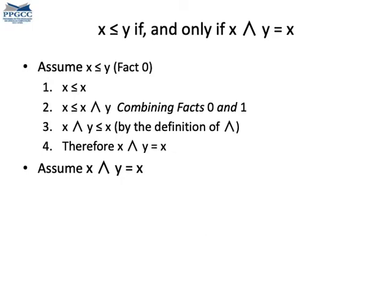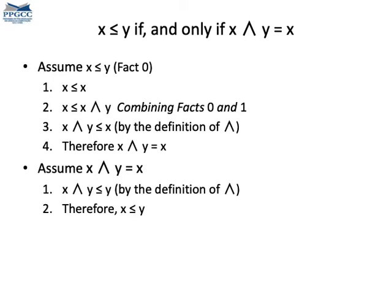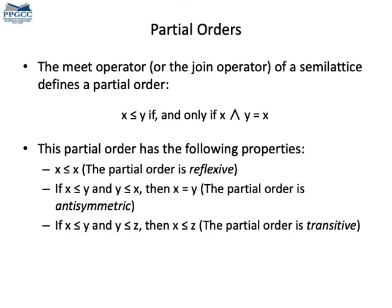But in this case, x must be less than or equal the meet of x and y. But the meet of x and y is less than or equal x by definition. The other direction of the proof is even simpler. If we assume that x meets y is x, then we already know that x meets y is less than y. Therefore, x must be less than or equal y. So, it's enough to have a well-defined meet or a well-defined join to have a partial order between the elements of the lattice. This partial order has three important properties. It's reflexive, antisymmetric and transitive.